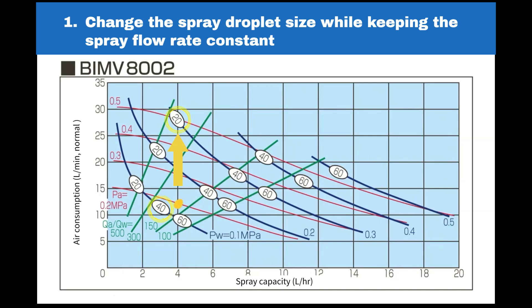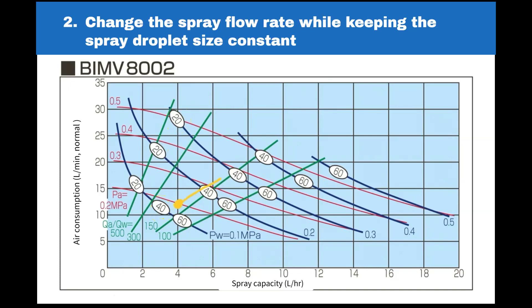Second, let's move the initial spray point to increase the spray flow rate while keeping the spray droplet size constant. The spray droplet size will remain the same at about 40 micrometers, but the spray flow rate will increase from the initial 4 liters per hour to approximately 9 liters per hour.